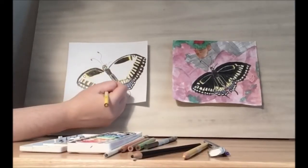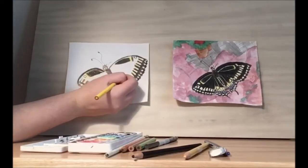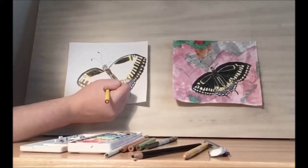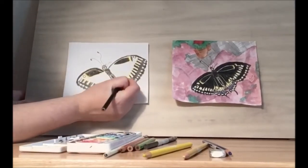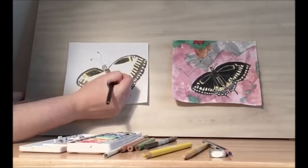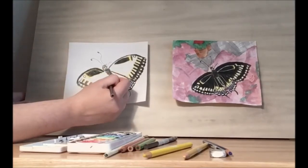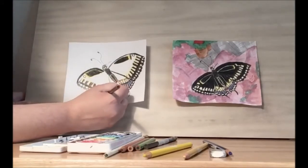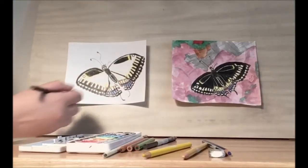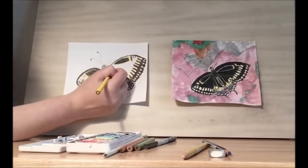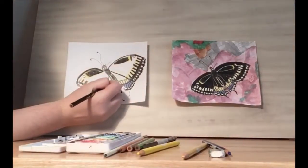And then where we have these circles, we'll just draw some lines back up to the center. Let's really emphasize the top portion of the wing. Same thing on this side. And then we'll draw some more yellow lines to give it some texture.